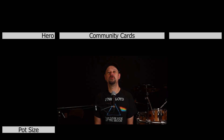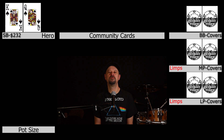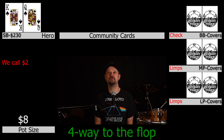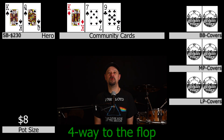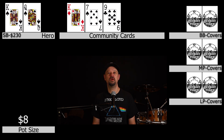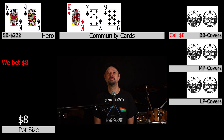This is a 1/2 no-limit hold'em hand. Hero is in the small blind with $232 and gets dealt king-queen of spades. There are two limpers and we complete, kicking in the extra dollar. The big blind checks, so we go to the flop four ways. The flop comes out king-seven-nine rainbow with one spade. We have top pair with a backdoor flush draw and bet $8, which is the pot. The big blind calls, late position calls — both players cover us.